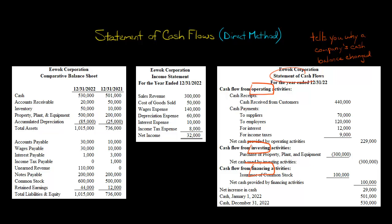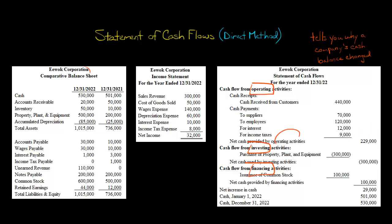One final point: the statement of cash flows is prepared for a period of time — in this case, the year ended December 31st, 2022 — not as of a point in time like the balance sheet. The balance sheet is a snapshot at December 31st, 2022, showing how much cash the company had. Whereas the statement of cash flows says, over the last year, how did cash change? We see this company generated $229,000 of cash flow from operating activities, had a negative cash outflow for investing activities from buying property, plant, and equipment, and raised $100,000 through financing activities by issuing stock.